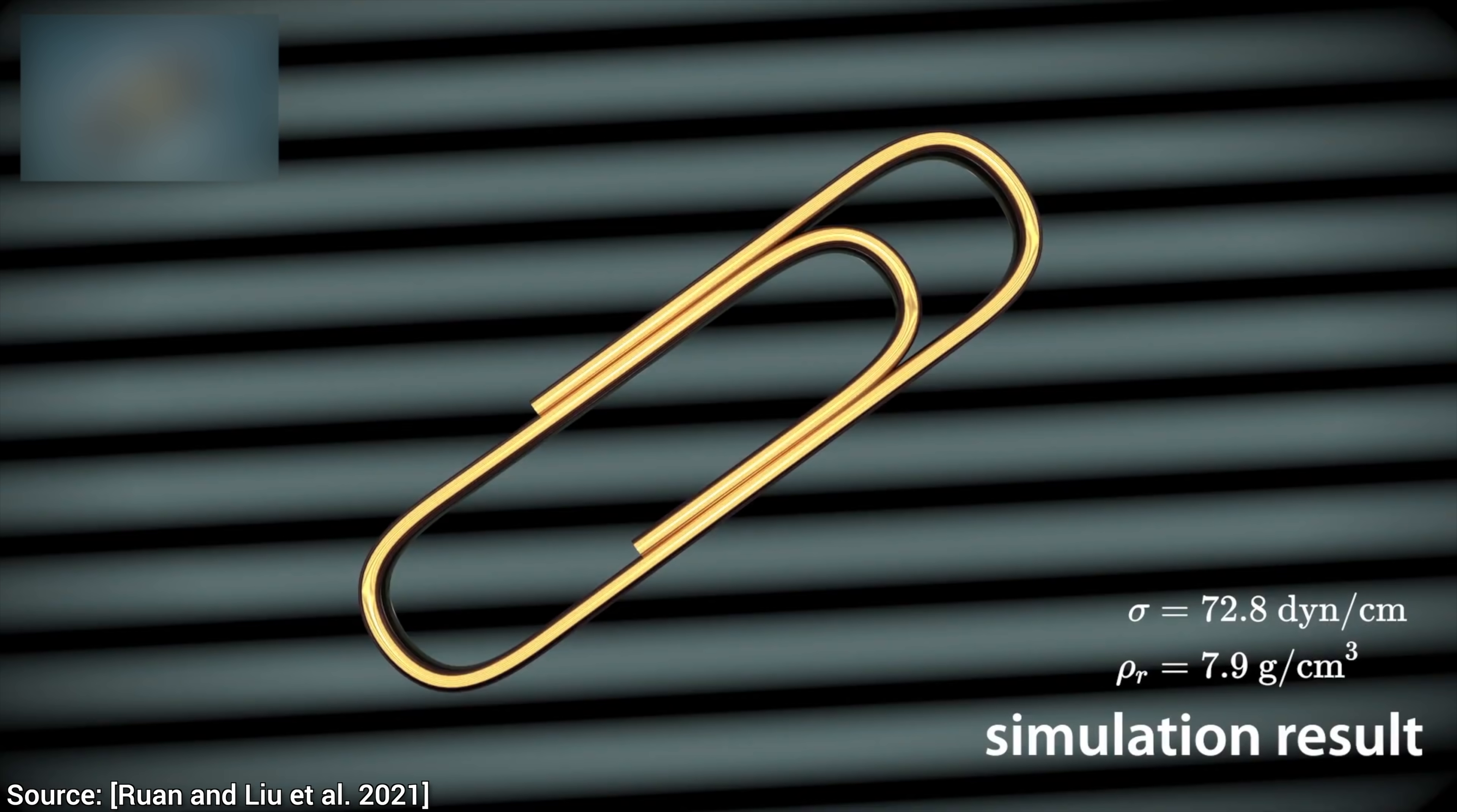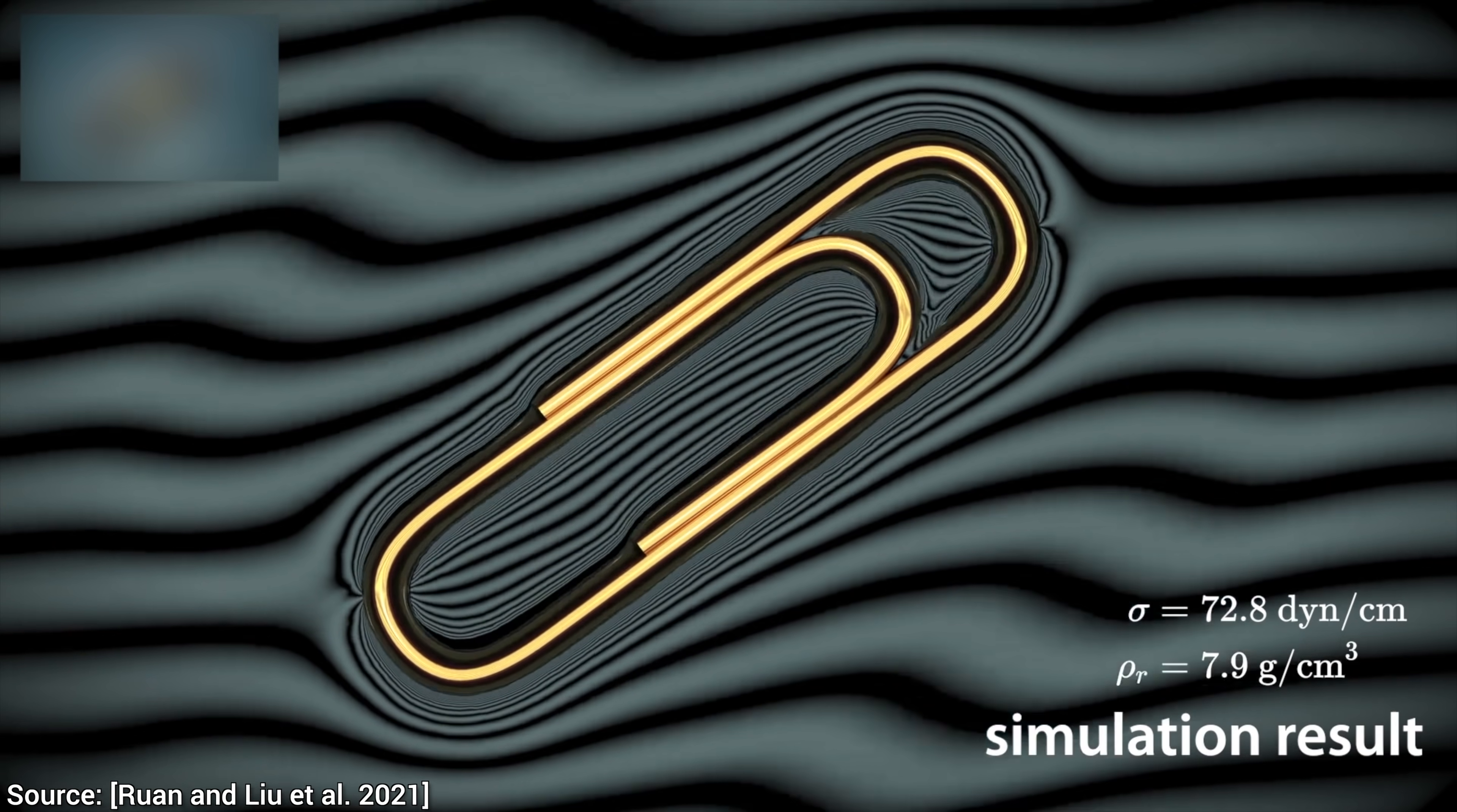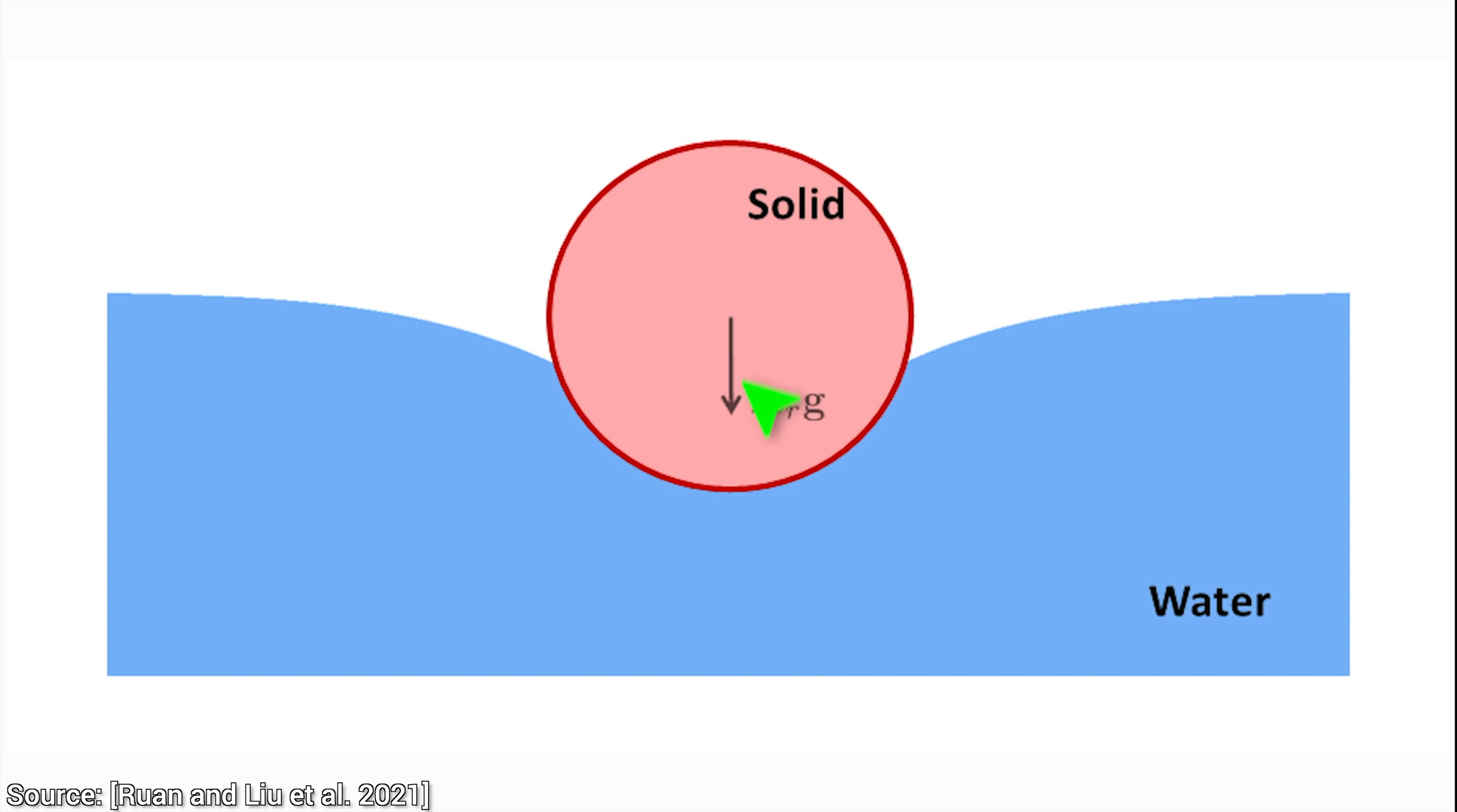So, what can it do? It can simulate this paperclip floating on water. That is quite remarkable, because the density of the paperclip is eight times as much as the water itself, and yet it still sits on top of the water. But how is that possible?